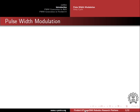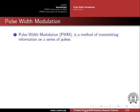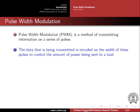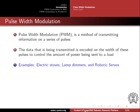A pulse, in simple terms, is a signal that goes high and low rapidly. Pulse width modulation is a method of transmitting information on a series of pulses. The data being transmitted is encoded on the width of these pulses. The width of the pulse determines the amount of power being sent to the load. A few examples where PWM is used are electric stuffs, lamp dimmers, servo motors, etc.